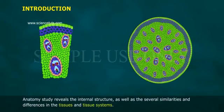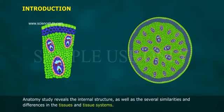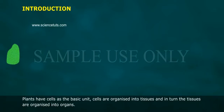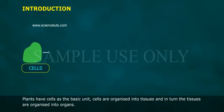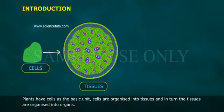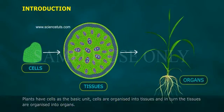Anatomy study reveals the internal structure as well as the several similarities and differences in the tissues and tissue systems. Plants have cells as a basic unit; cells are organized into tissues, and in turn the tissues are organized into organs.